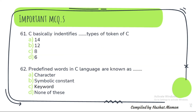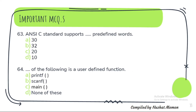Question 61: C basically identifies six types of token of C. Question 62: Predefined words in C language are known as keyword — option C. Question 63: ANSI C standard supports how many predefined words? It supports 32 — correct option is B.